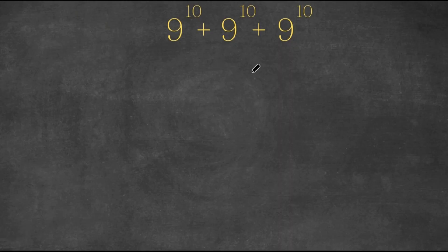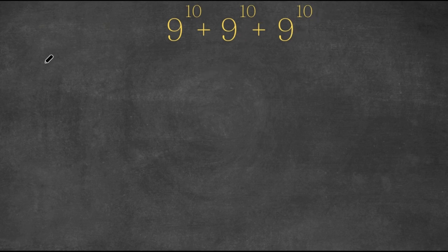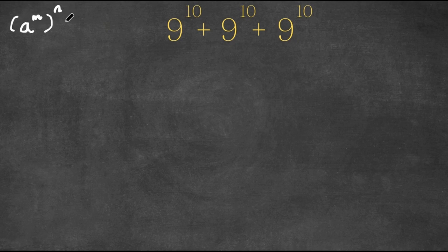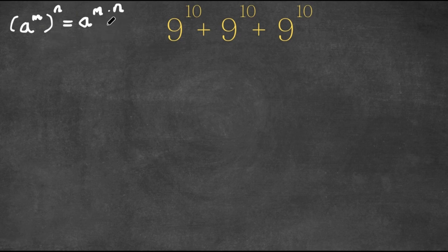Hey guys, welcome back to Click Academics. In today's video I'm going to be teaching you guys how to solve this exponential problem. So we have 9 to the power of 10 plus 9 to the power of 10 plus 9 to the power of 10. Now, if we have something in the form a to the power of m to the power of n, this can be written as a to the power of m times n, and the same can also be done vice versa.